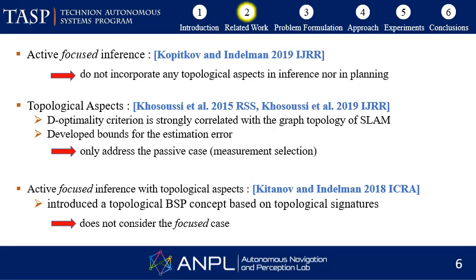While previous works already addressed the focused beliefs-based planning problem, none of them incorporate any topological aspects in inference nor in planning. Kossuss et al. were the first to show that under some conditions the D-optimality criterion is strongly correlated with the graph topology of SLAM, and the estimation error between that criterion and a topological signature is bounded. Kitanov and Indelman introduced the topological belief space planning concept, ranking candidate actions based on different topological signatures, and identified that the extension from the passive to the active case requires a normalization term to account for beliefs with different path lengths.